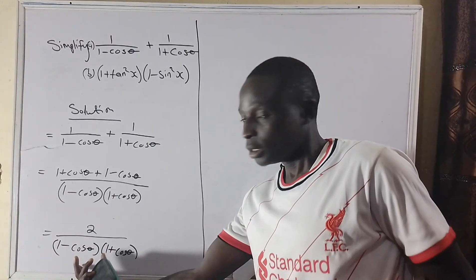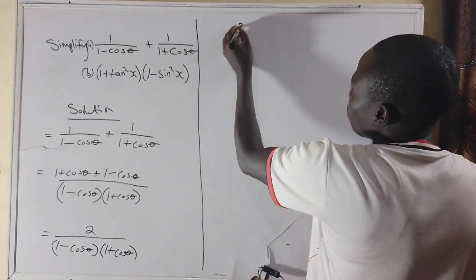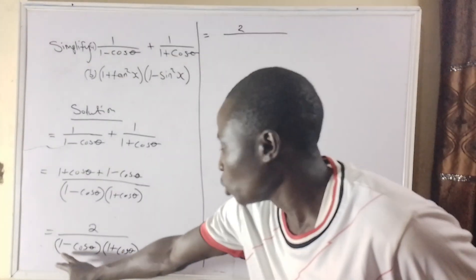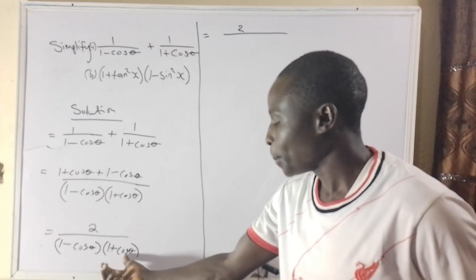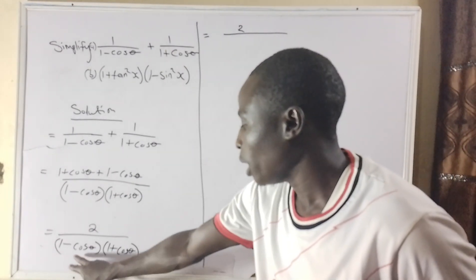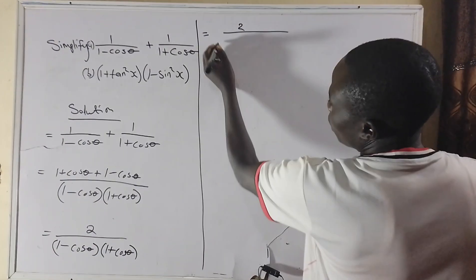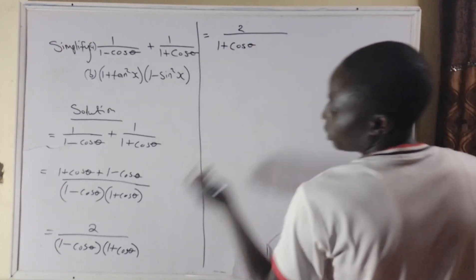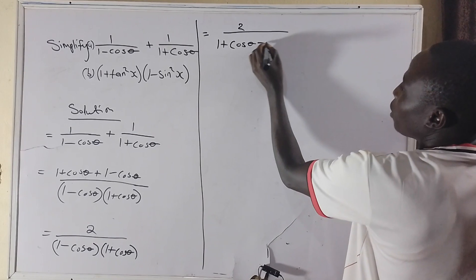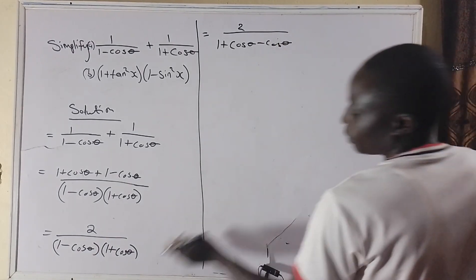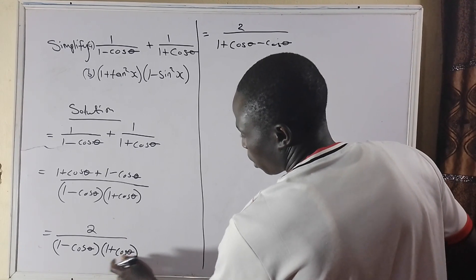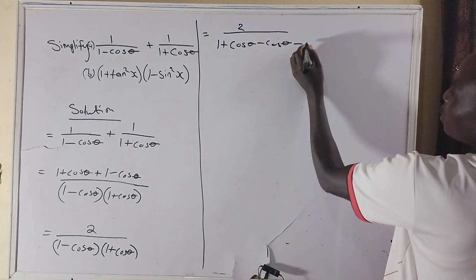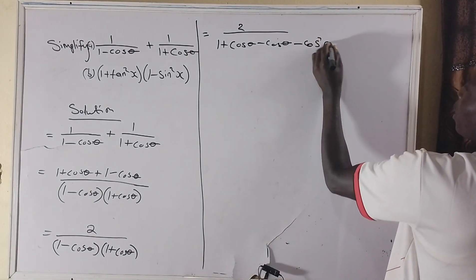There is a need to expand this particular bracket. That means I will have 2 over: 1 times 1 is 1, plus cos theta, then minus cos theta times 1 is minus cos theta, and cos theta times cos theta is cos squared theta.